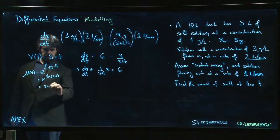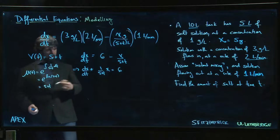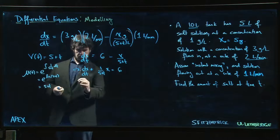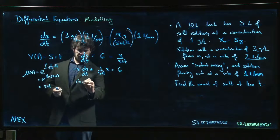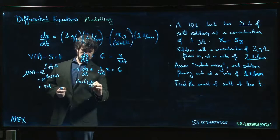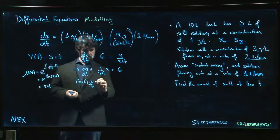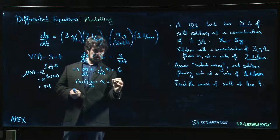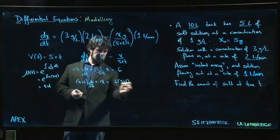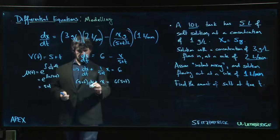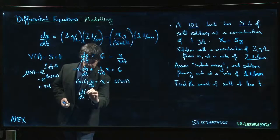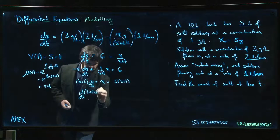That suggests that we should rewrite our equation as (5 + t) times dx/dt plus x equals 6 times (5 + t). Because on this side, this becomes d/dt of (5 + t) times x.